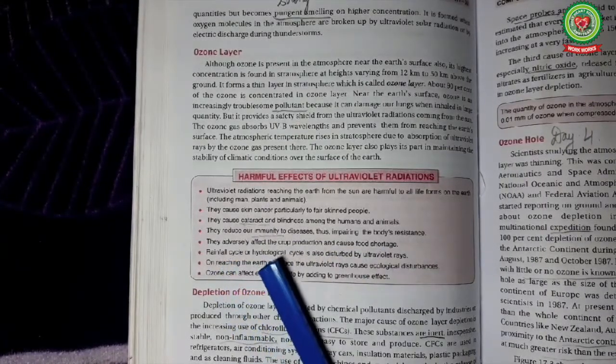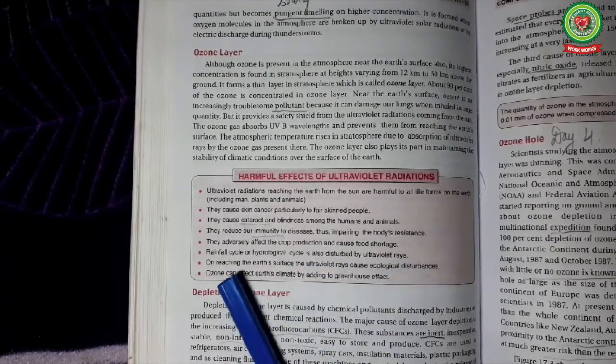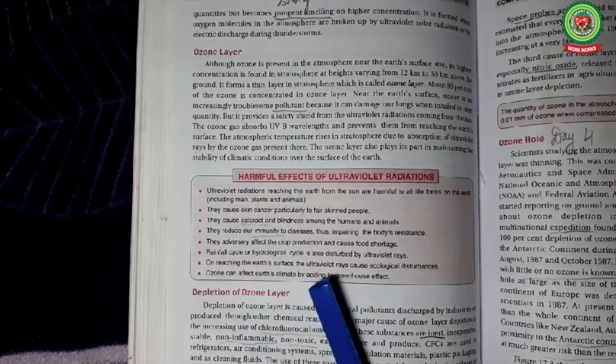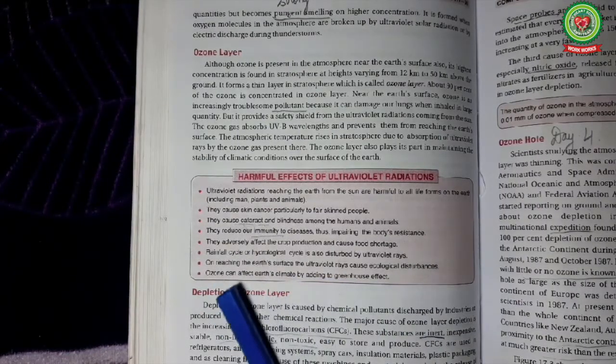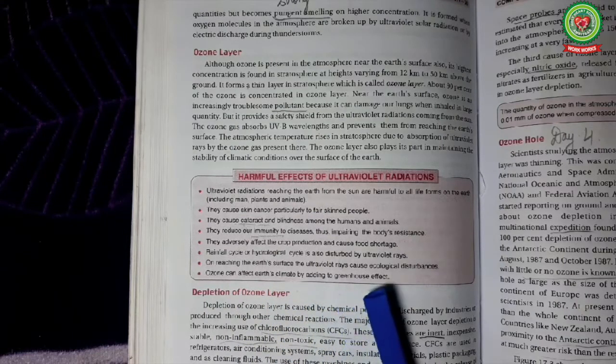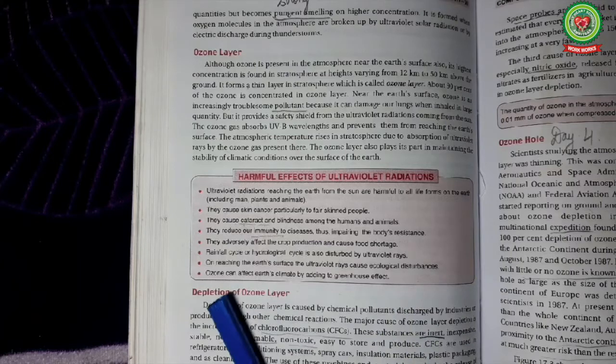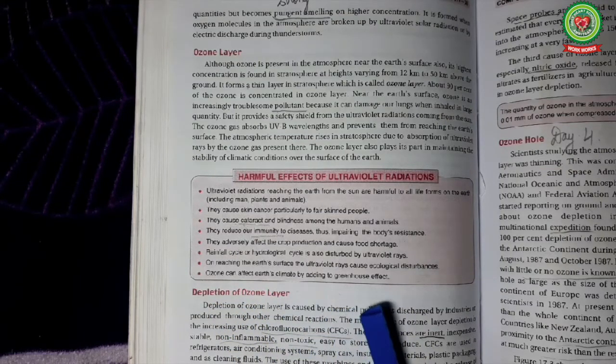They adversely affect the crop production and cause food shortage. Rainfall cycle or the hydrological cycle is also disturbed by ultraviolet rays. On reaching the earth's surface, the ultraviolet rays cause ecological disturbances. Ozone can affect earth's climate by adding greenhouse effect.